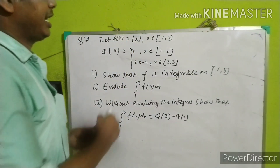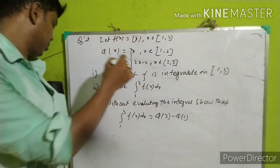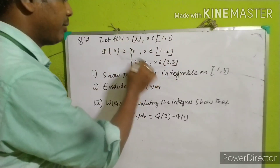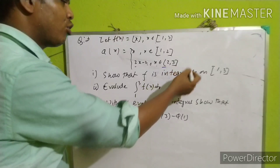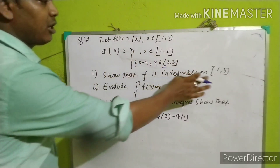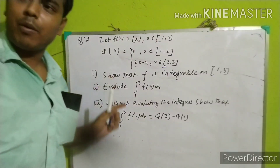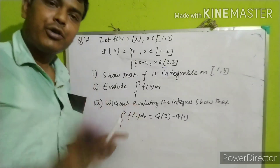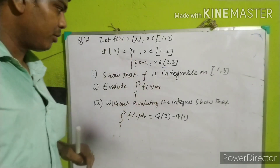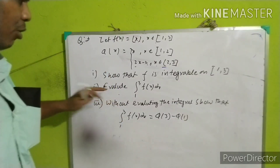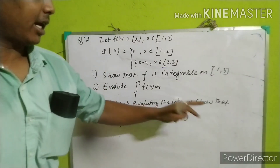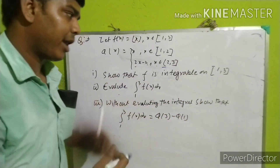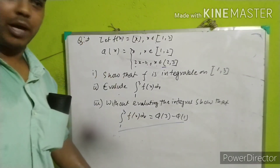Next problem: phi of x equals x on the closed interval, which is 2x minus 2 on the open-close interval 2, such that f is integrable on the closed interval. Without doing the full integral calculation, the integral is equal to phi of b minus phi of 1.